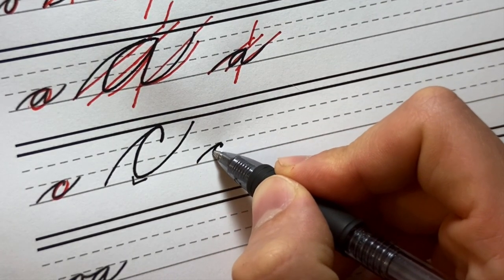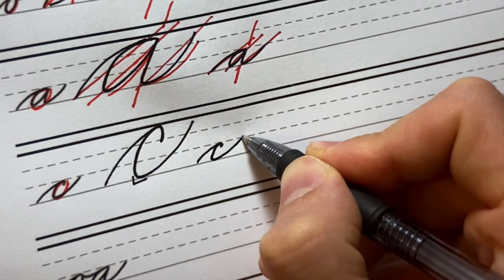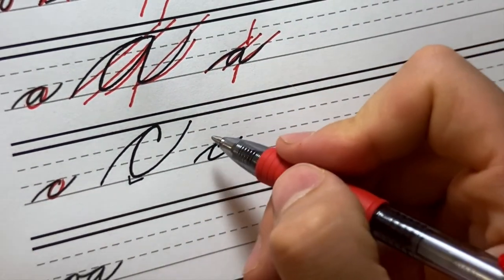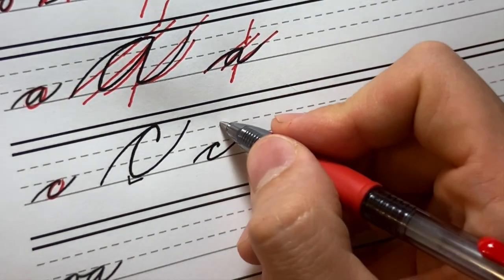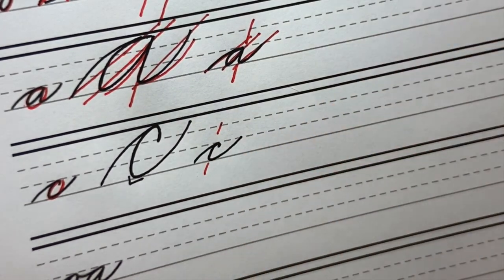I will do it small for you. Hook, come down, tight turn at the bottom. I'd much rather have a flat back to the C than one that's too rounded. It's on the main slant.